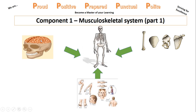We're going to be looking at the main functions of the Skeletal System, the names and the different types of bones, what connective tissue is, and finally the different types of movements associated with the Skeletal System. As always, make sure you've got your notes at your side. Anything that's underlined, make a note of it, and feel free to pause and rewind the video as you're watching.